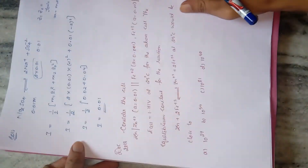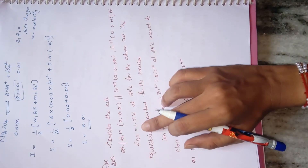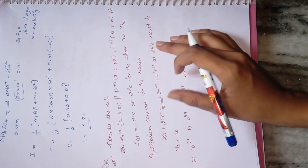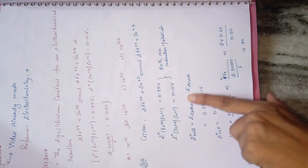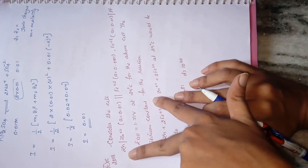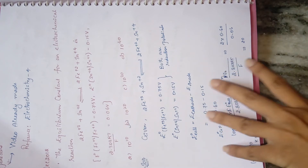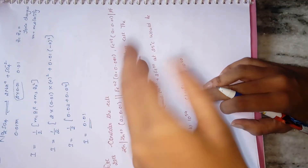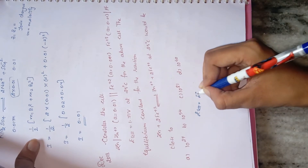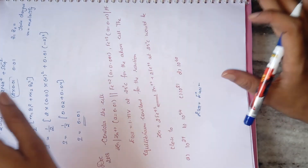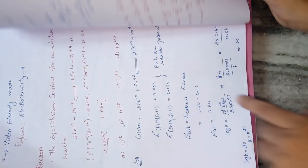December 2013: consider the given cell reaction and find E_cell using the given activity/concentration values. This follows a similar pattern to the December 2012 question, except here you are not directly given E° values — you must first find E°cell, then apply the Nernst equation: E_cell = E°cell - (2.303RT/nF) × log Q.